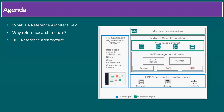We also have vSAN — Virtual SAN — and the network hypervisor which is NSX. On top we have the VI domain, the virtual infrastructure workload domain, where we can run our production virtual machines, data, and applications.